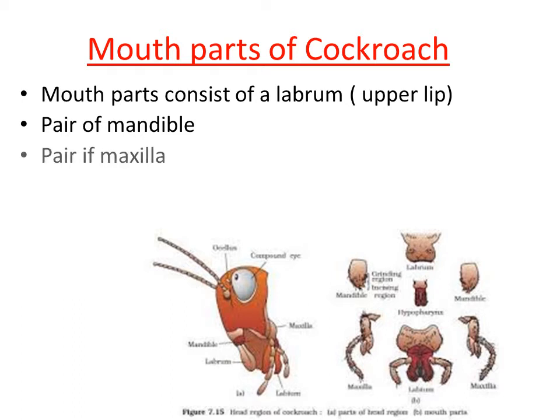One more paired structure we can see in the mouth part, located very next to the mandible, is named as maxilla. The function of maxilla is to hold and manipulate food. When the mandible is chewing and biting the food, the maxilla holds the food in proper position so that it can be chewed and sliced by the mandible.